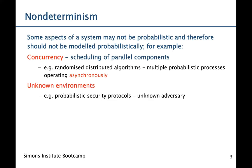Second, we might have a system in an unknown environment. An example of this is probabilistic security protocols, where we don't know how the adversary behaves. So we want to model the system under all possible adversaries, meaning we need to model the choices that the adversary makes non-deterministically.